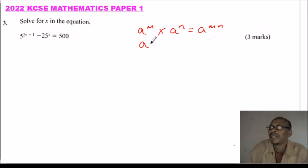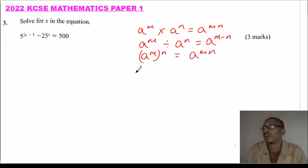Then we have a^m divided by a^n equals a^(m-n). And we have (a^m)^n is the same as a^(mn). So these are the three rules of indices.